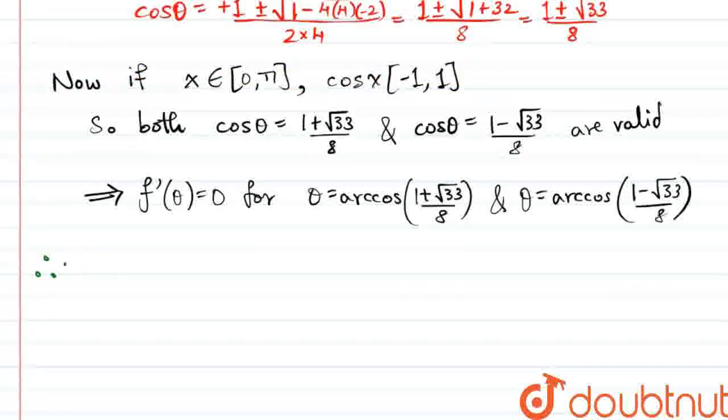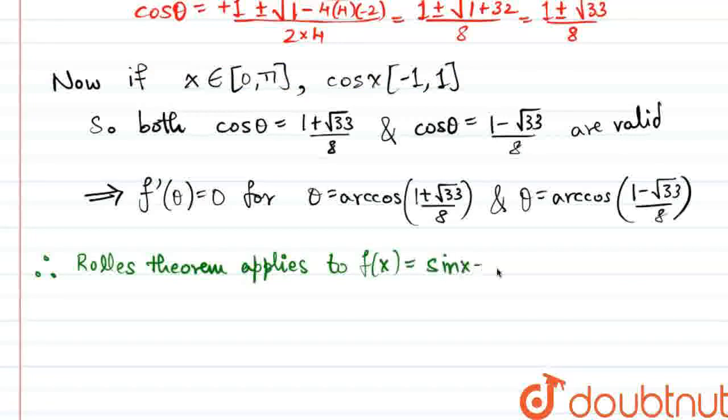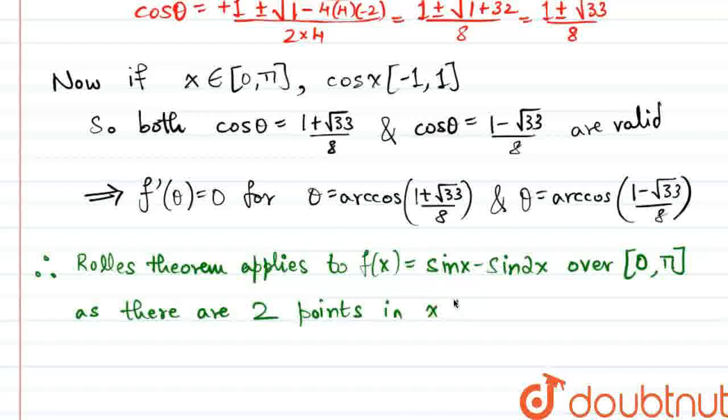Hence, we can conclude that Rolle's theorem applies to f of x is equal to sin x minus sin 2x over the interval 0 to pi closed as there are not one but two points where the derivative of f is going to be equal to 0.